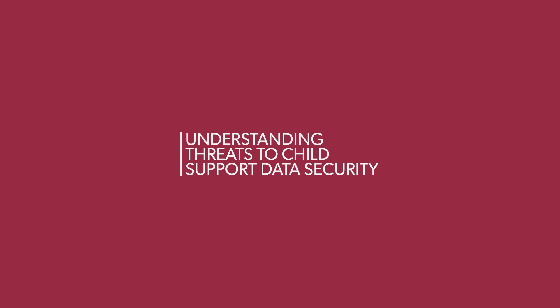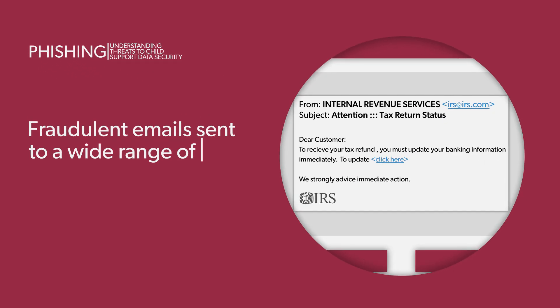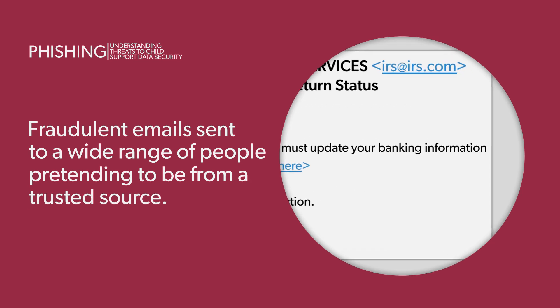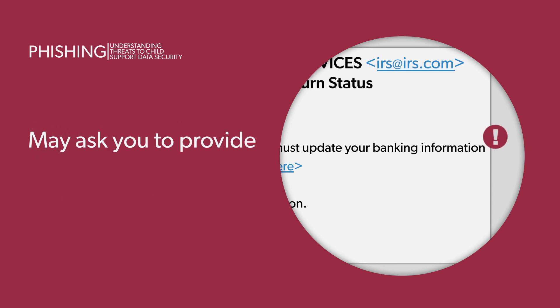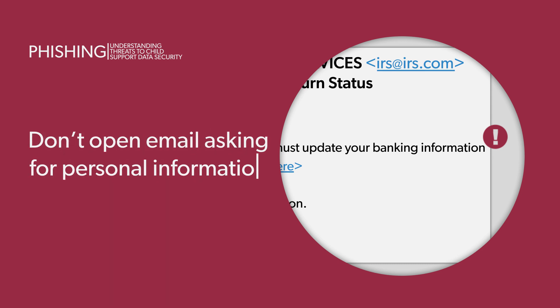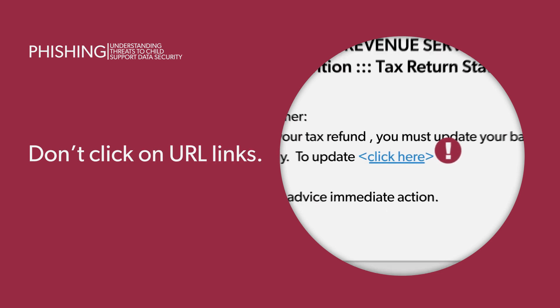Understanding threats to child support data security: let's talk about some of the techniques cyber criminals use to obtain personal data. Phishing: phishing attacks are fraudulent emails sent to a wide range of people, pretending to be from a trusted source like a bank or the IRS. Phishing emails may ask you to provide financial information, passwords, or other confidential data. Don't open any suspicious email asking for personal information, and don't click on URL links to reply.